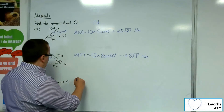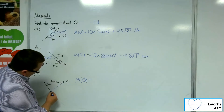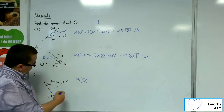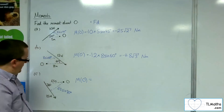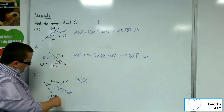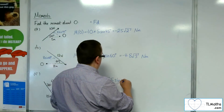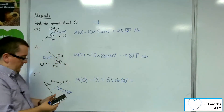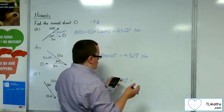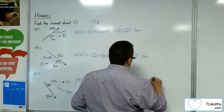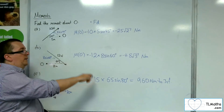For the last one, the moment about O: finishing off the right-angled triangle, this side will be 65 sine 80 — the opposite side. So the moment is 15 times 65 sine 80. That gives me 960 Newton metres to 3 significant figures. Now, because of the direction, this is anti-clockwise, and so it's positive.